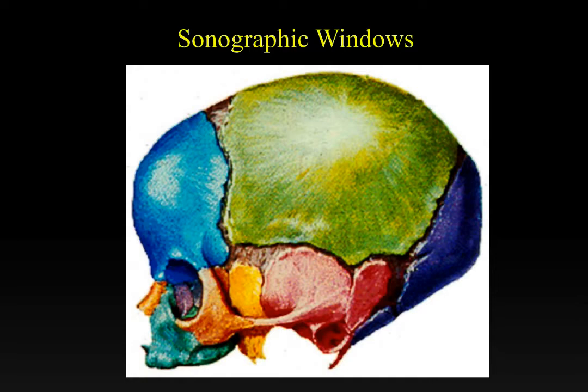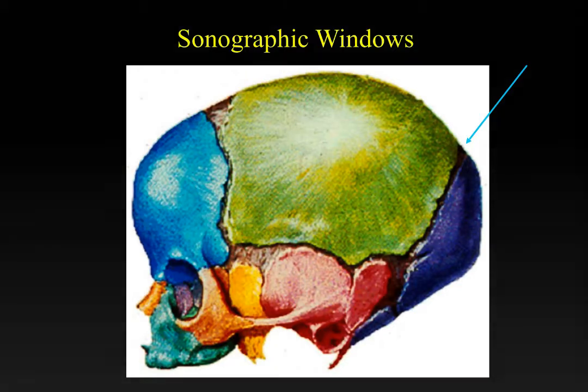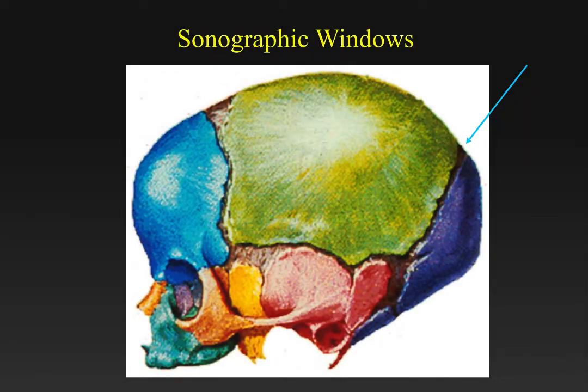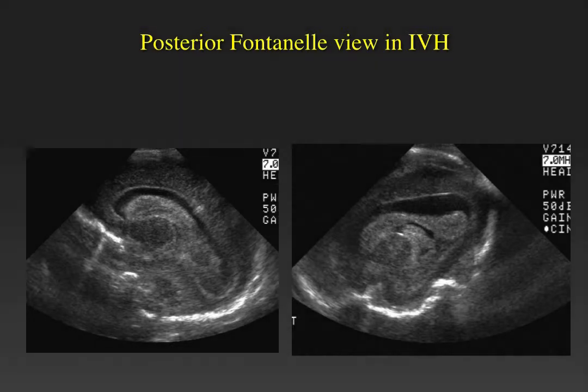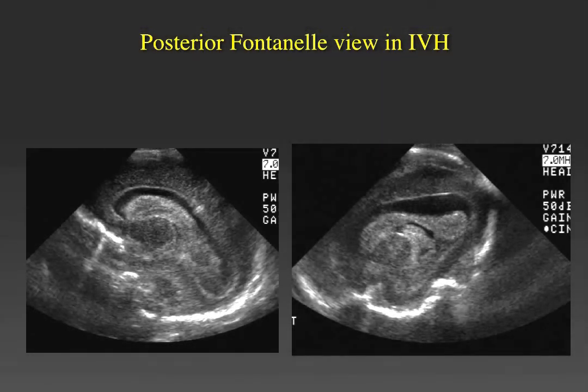The first fontanelle I'd like to cover is the posterior fontanelle. It's located at the junction of the parietal and occipital bones, in the midline, and can be found by simply bringing the transducer posteriorly along the midline until you feel the opening of the posterior fontanelle. You can typically image in both sagittal and transverse orientation.